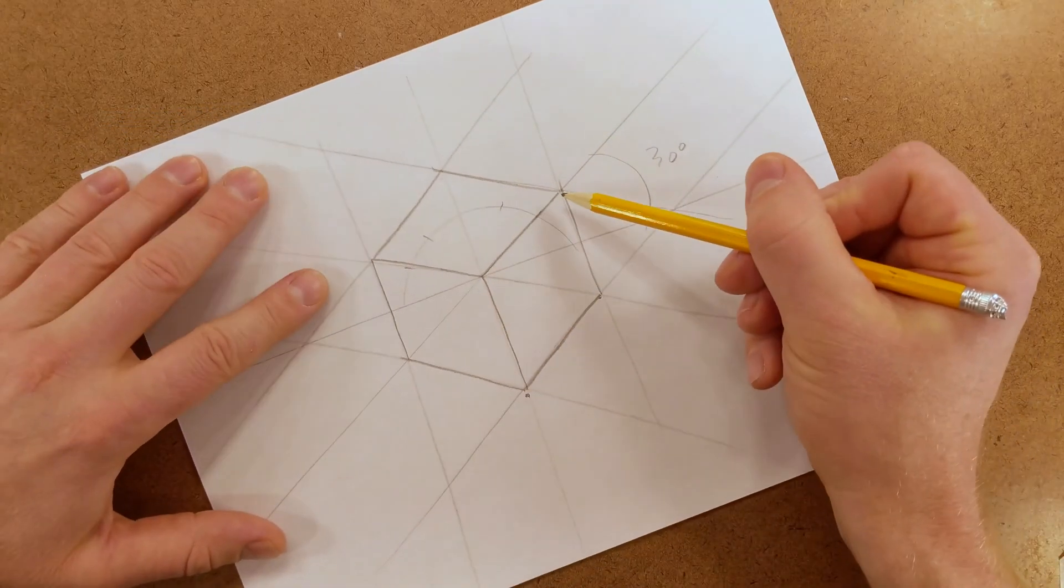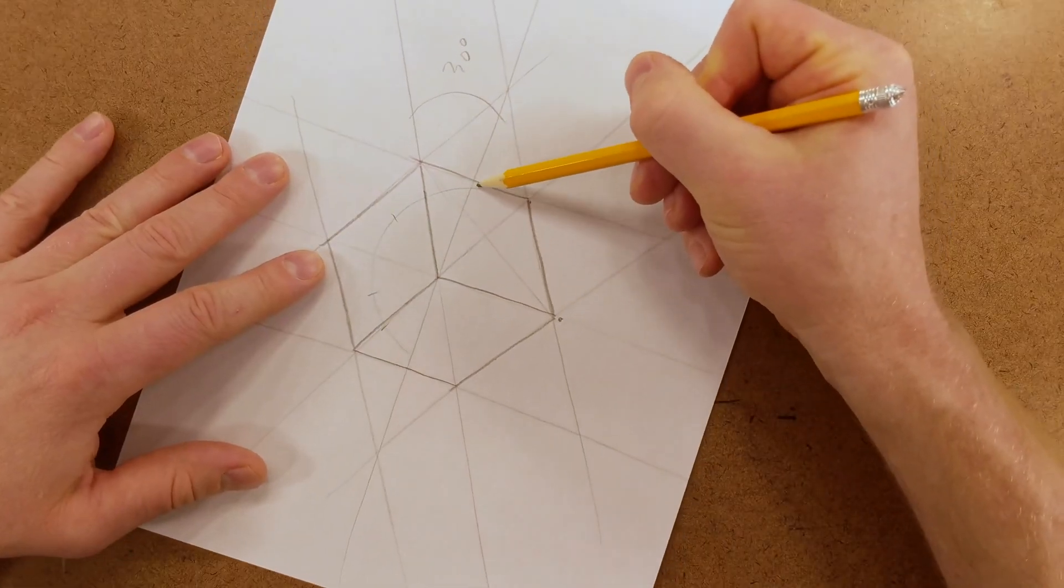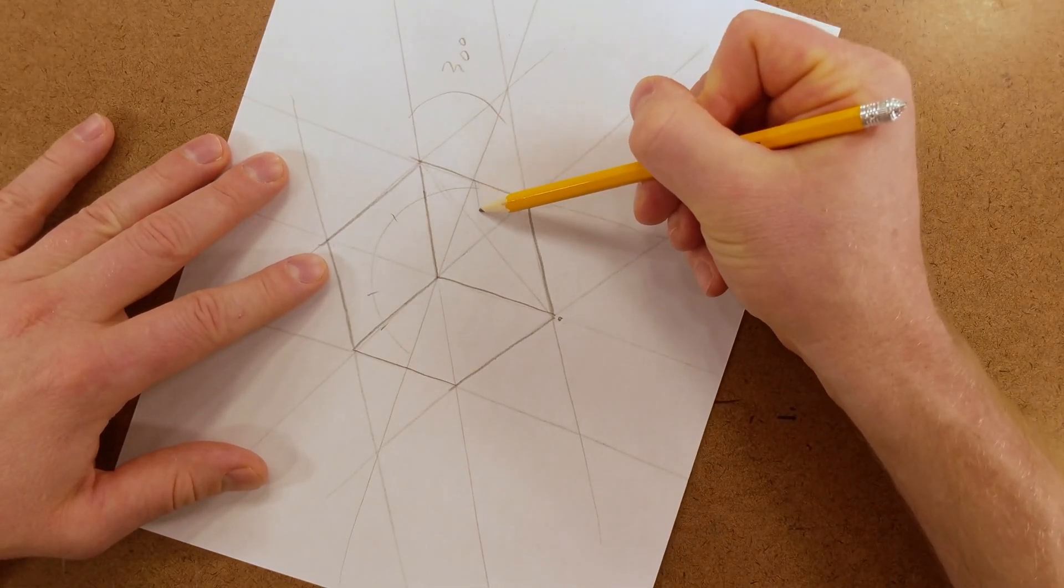The first thing to do is draw diagonal lines through each corner. Then through this intersection, draw parallel lines, vertical and horizontal.